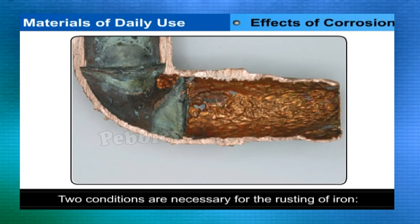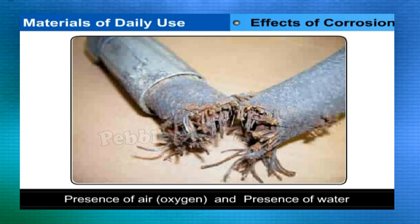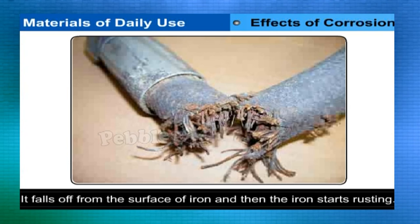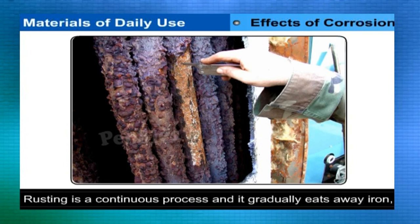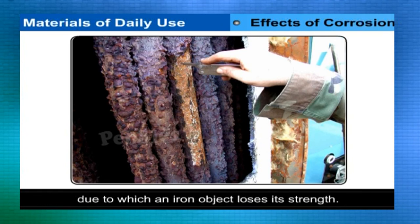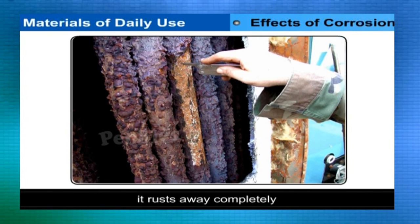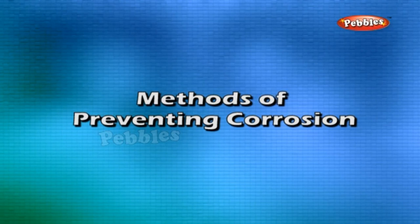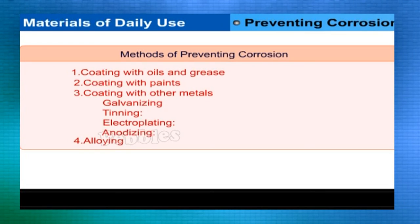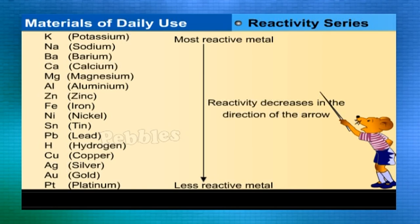Conditions for rusting: presence of air (oxygen) and presence of water. Effects: rust is soft and porous, gradually falls off, and the iron beneath starts rusting — making it a continuous process that eats away iron and reduces its strength. An iron object left in damp air or water for a long time rusts away completely. Methods of preventing corrosion are highlighted in the table.